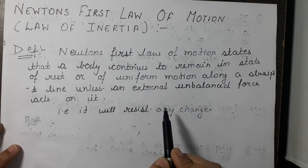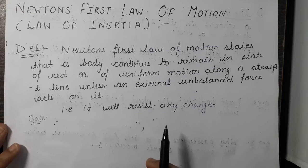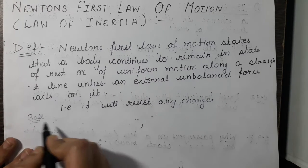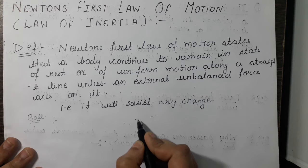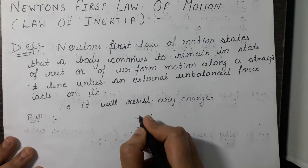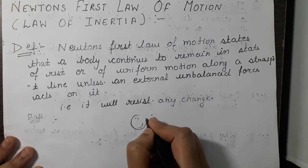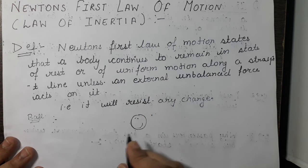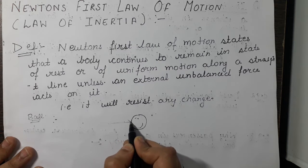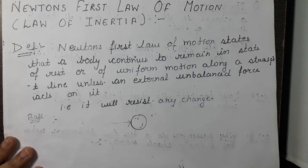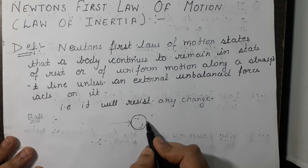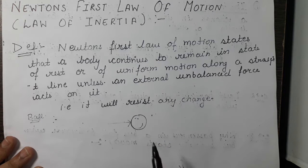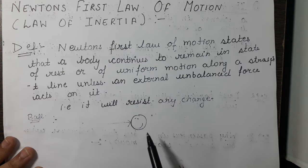Let us take an example of a ball. Suppose this ball is in the state of rest — it will continuously remain in this state unless we apply an external force, that is, unless somebody kicks the ball. Only then will it start to move; otherwise it will always remain in the state of rest.